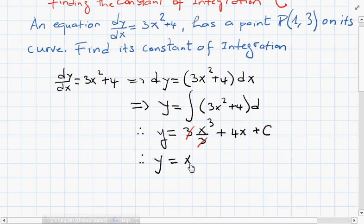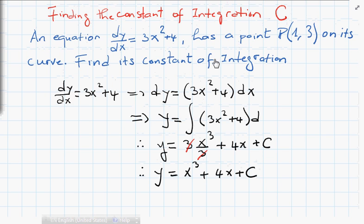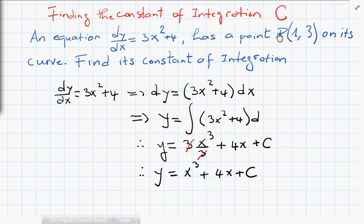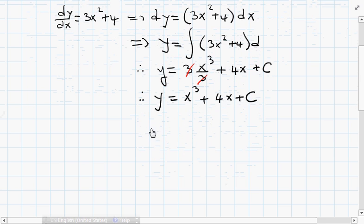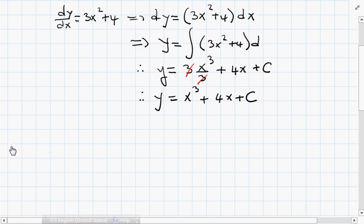Now we have the point P on the curve of this equation. P has the value P(1, 3), where 1 is the x value and 3 is the y value.